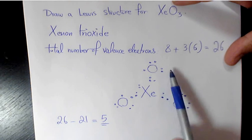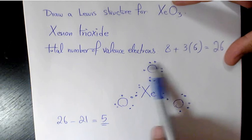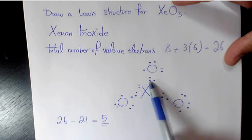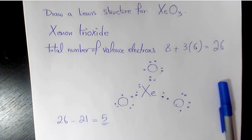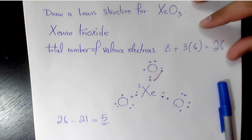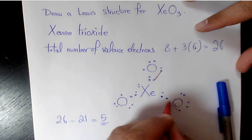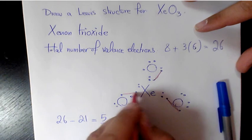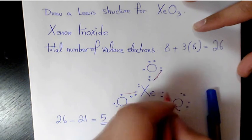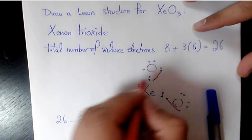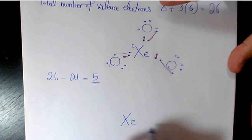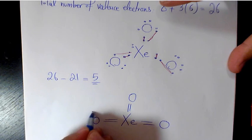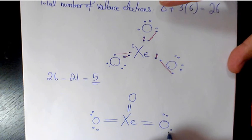If you look at the oxygens now, they don't satisfy the octet rule — they only have 7 electrons. That means one electron from each oxygen needs to bond with xenon. So we form a double bond between xenon and each oxygen.